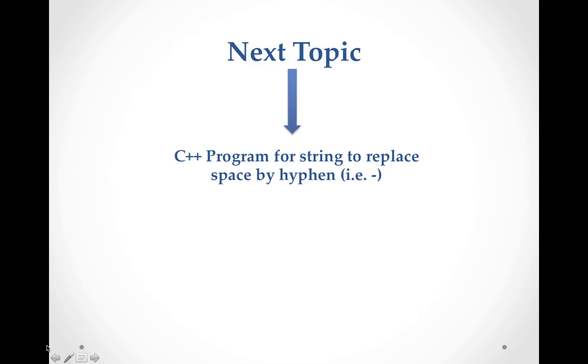The next program will be a C++ program for strings to replace space with hyphen. If we have entered a string, we have to replace that space with hyphen - replace with a dash. The programs are all similar, so I will give you one by one so that you can understand what changes in each program. You will get the meaning of each program. For now, practice this given program, and we will do the hyphen program next time. Thank you, class.